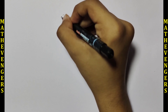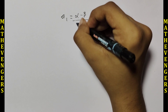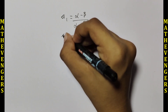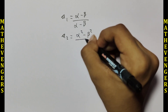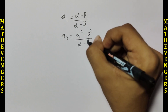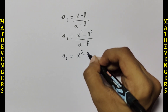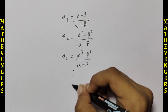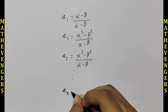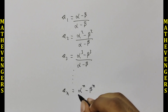Let a₁ = (alpha - beta) / (alpha - beta), a₂ = (alpha² - beta²) / (alpha - beta), a₃ = (alpha³ - beta³) / (alpha - beta), and so on, up to aₙ = (alphaⁿ - betaⁿ) / (alpha - beta).